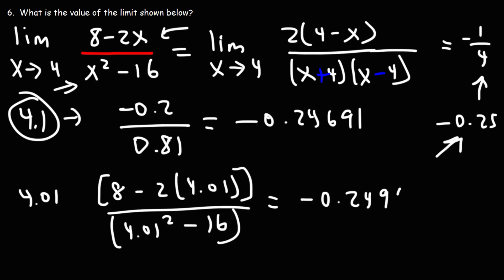you should get negative 0.24968, which is very close to negative 0.25. So as you can see, as we plug in values that get closer and closer to four, the limit will approach this value. It will get closer and closer to negative 0.25. Eventually it will converge to negative one over four as x approaches four.